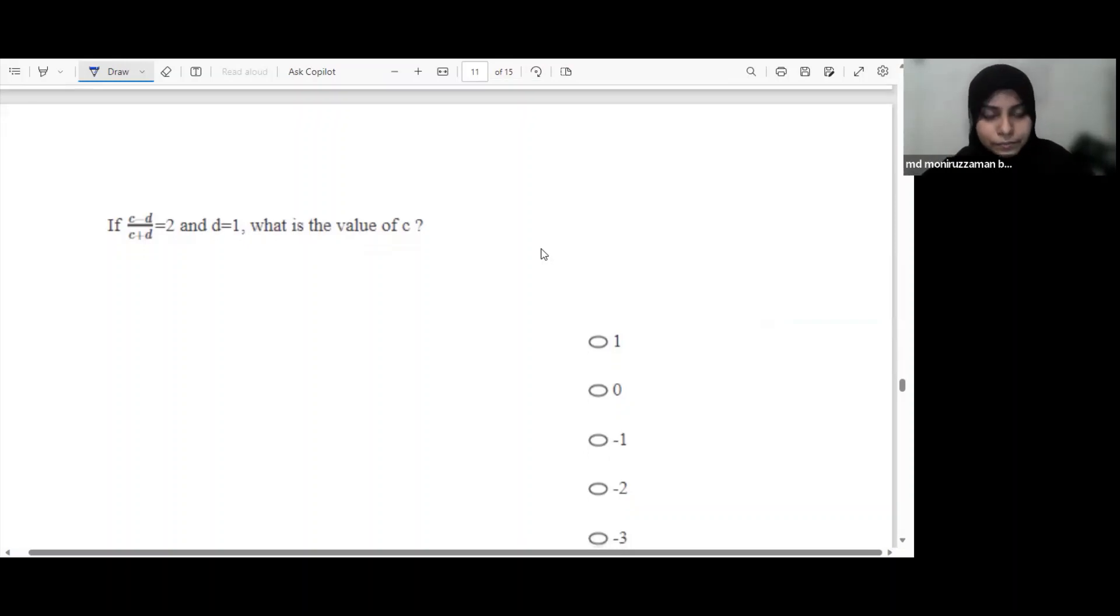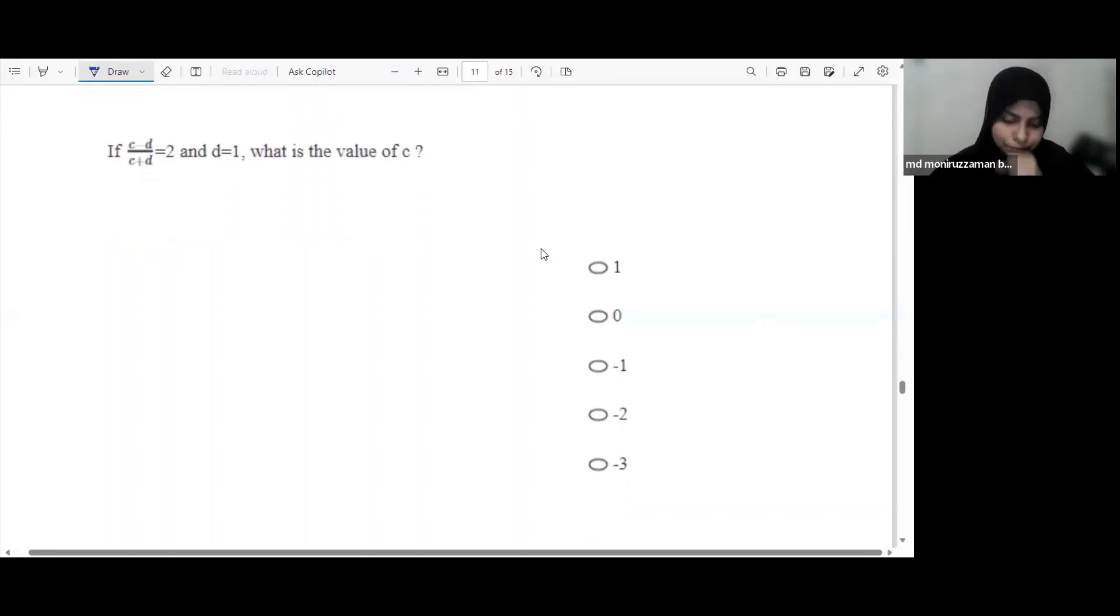So per question, we have to see now. We have two relations actually - this is the value of c and d. The relation is c minus d divided by c plus d equals to 2. Okay, we have to simplify this.